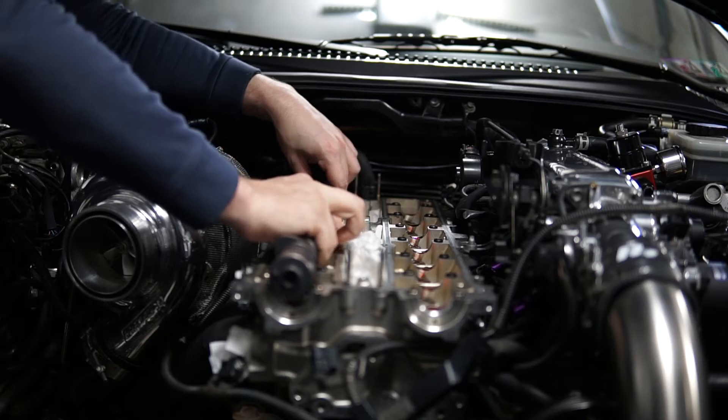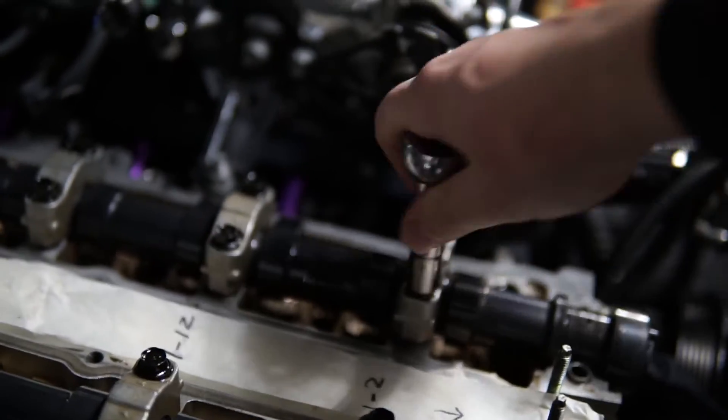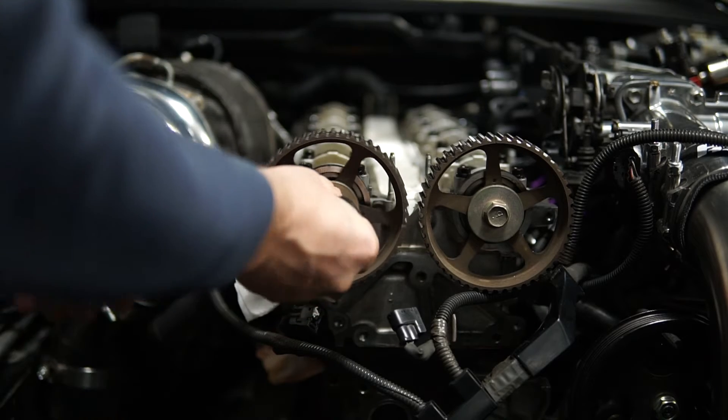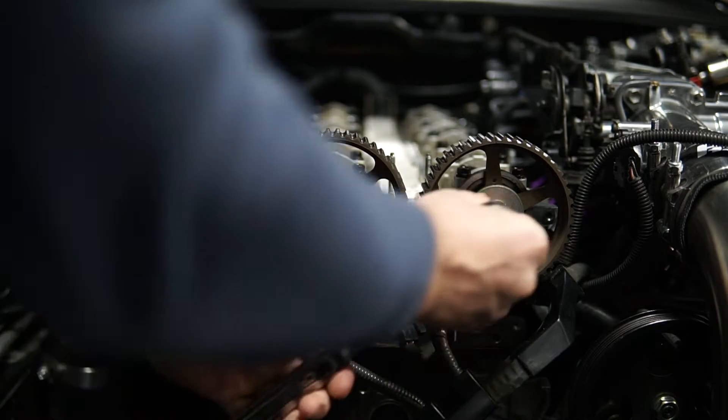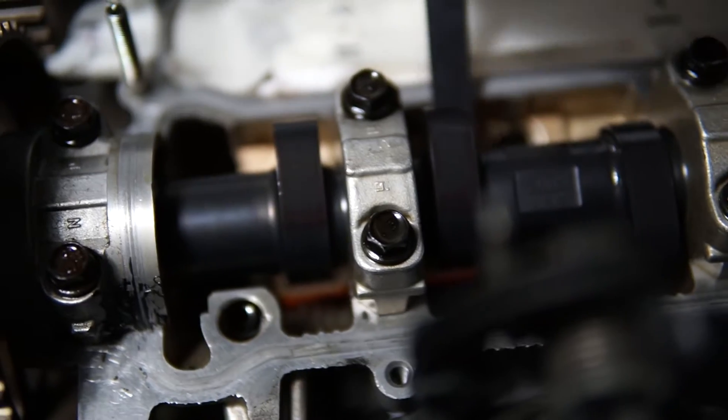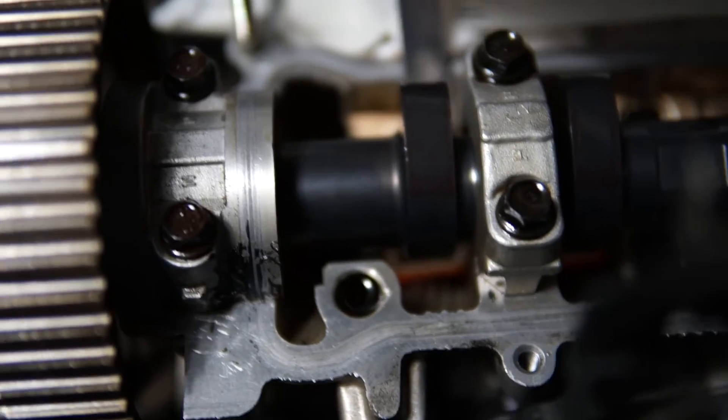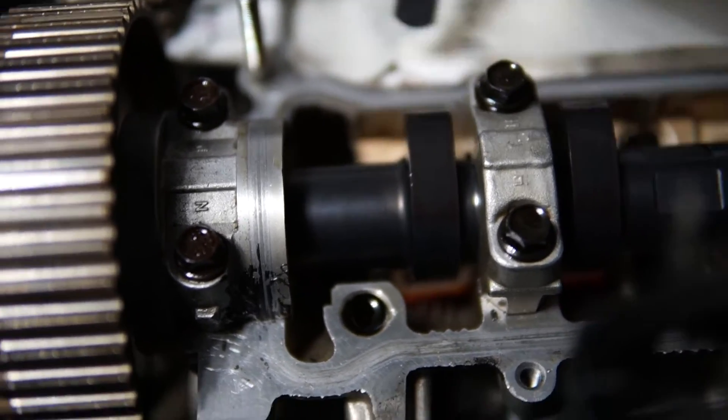You'll first need to measure the clearance with the camshafts installed. You'll need to rotate the camshaft in a pattern to allow for the proper measurement at each valve location. Each measurement should be taken with the camshaft lobe pointed away from the bucket assembly.